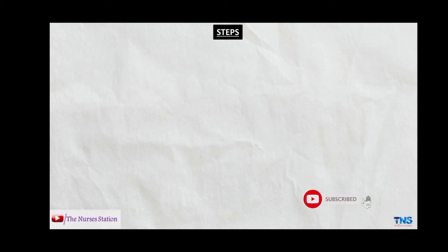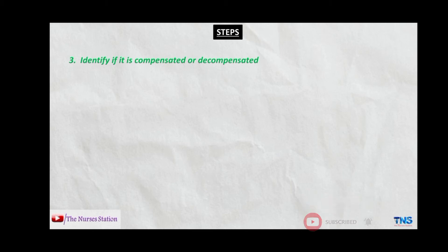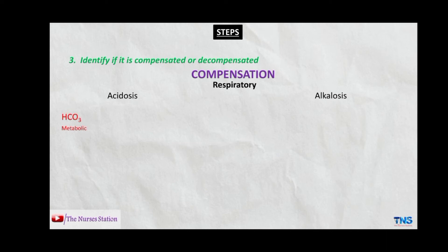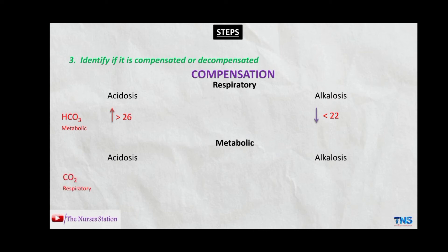The third step is to identify if it is compensated or decompensated. If you have a respiratory condition — whether respiratory acidosis or alkalosis — the metabolic system tries to compensate by increasing or decreasing the amount of bicarbonate. Similarly, in metabolic conditions, the respiratory system tries to compensate by increasing or decreasing the amount of carbon dioxide in the blood.